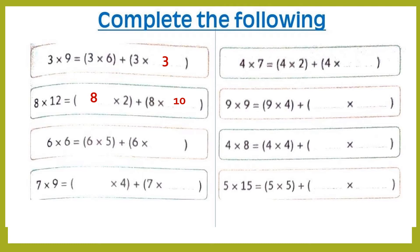6 times 6 equals 6 times 5 plus 6 times blank. The first 6 stays the same; the second 6 we break into 5 plus 1. Then: 7 by 9 equals 7 times blank — the 7 stays the same and 9 is broken into 4 plus 5. Next: 4 times 7 equals 4 times 2 plus 4 times blank — with 2 plus 2 plus 5.